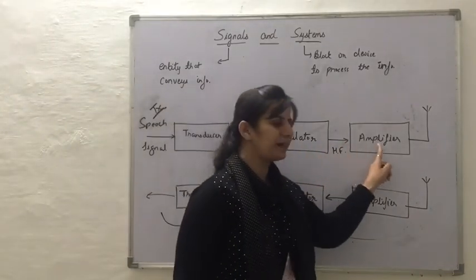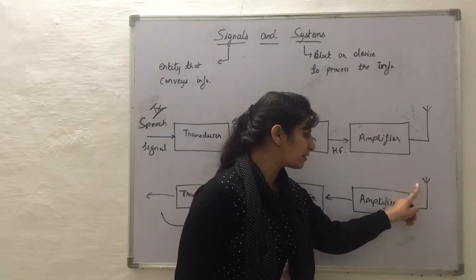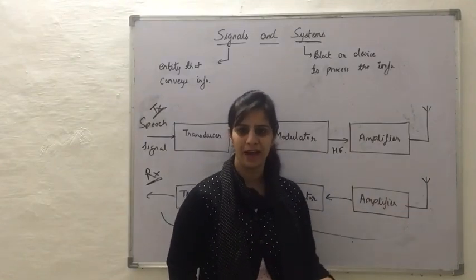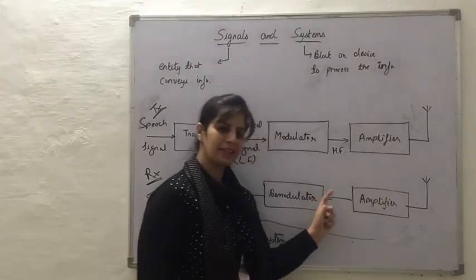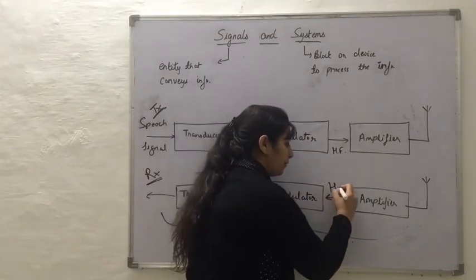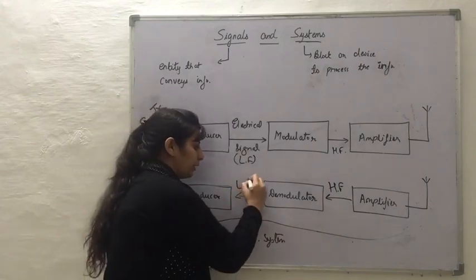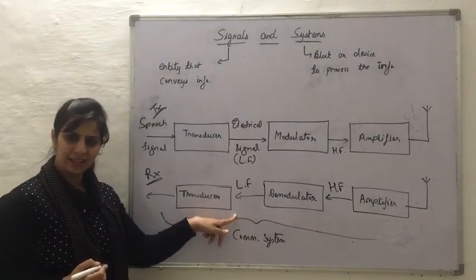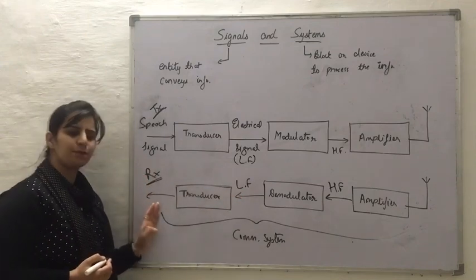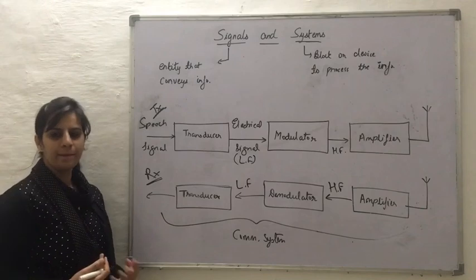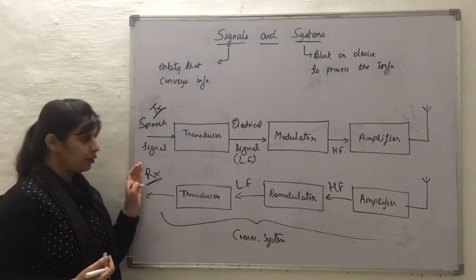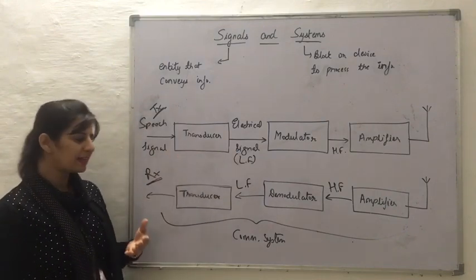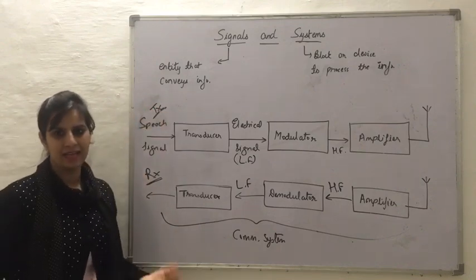The signal transmitted by the amplifier will be received at the receiver's end. The received signal is amplified to detect the information from it. The signal, which was at high frequencies, is then converted to low frequencies by the demodulator circuit. The low-frequency electrical signal is then converted back into a speech or audio signal that can be heard by the user at the receiver's side. So these blocks processing the signals are the systems, and the information being transmitted from one end to the other is the signal.